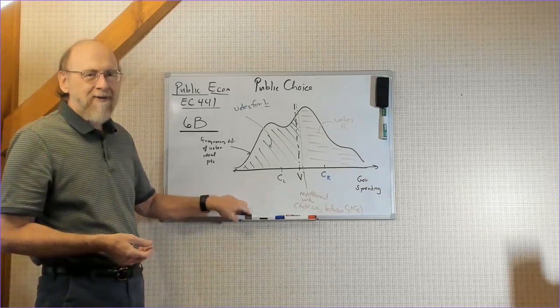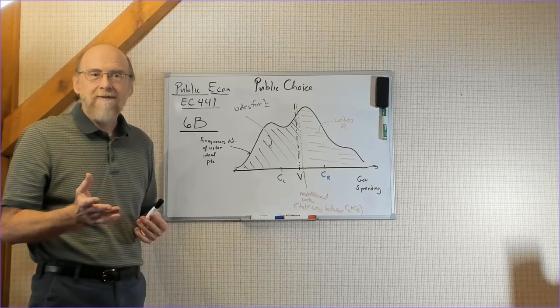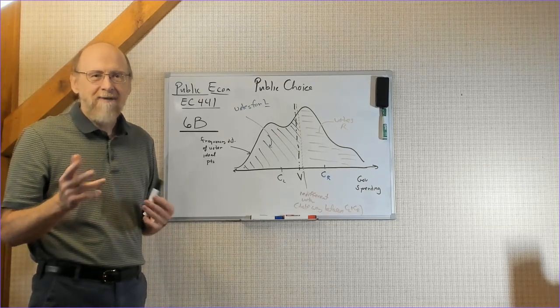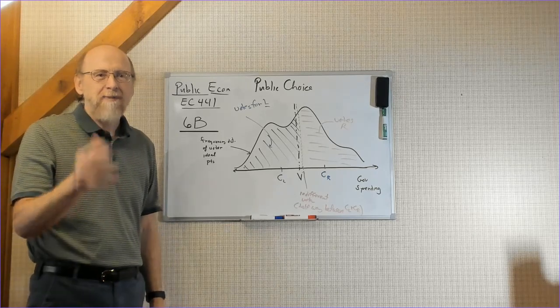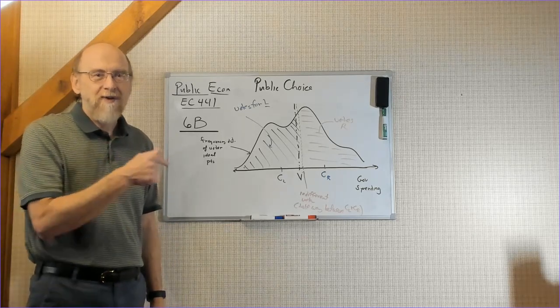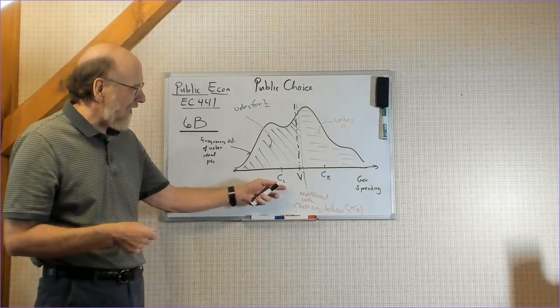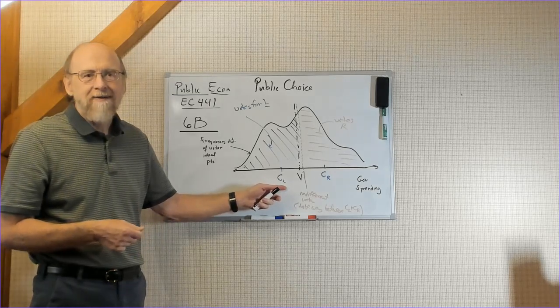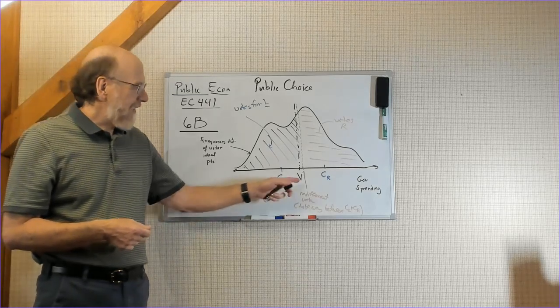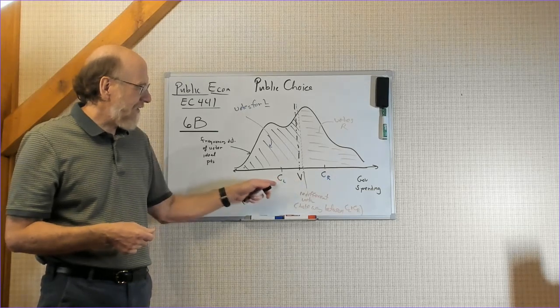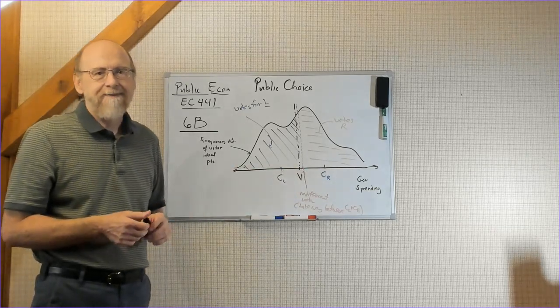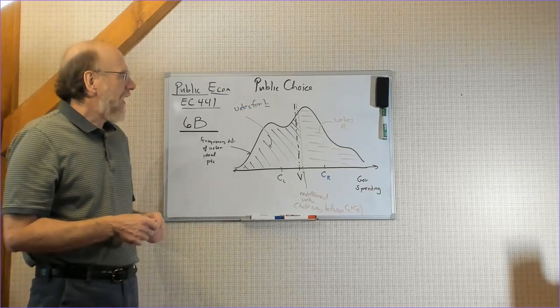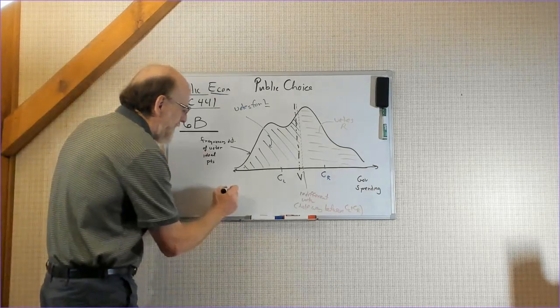Now who wins? Well, if you remember the weak form of the median voter theorem, you should know. The median voter always votes with the majority. Who does the median voter vote for? He votes for candidate L in this particular case because he's to the left of the indifferent voter. He's closer to CL, and so CL wins.